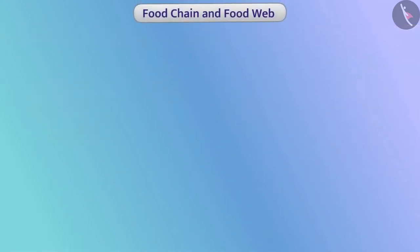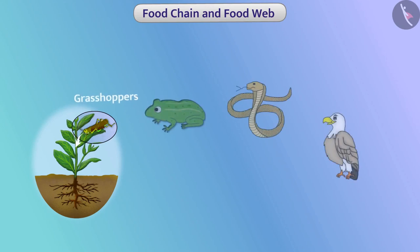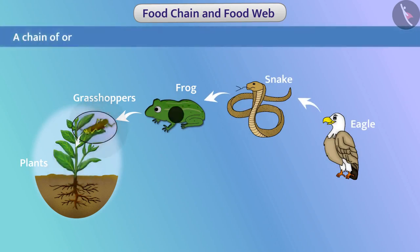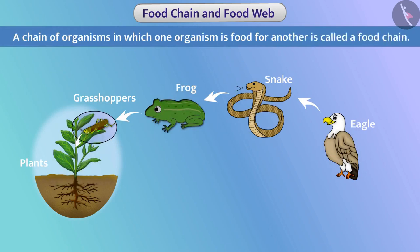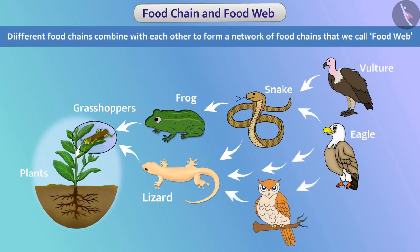Now let us learn about the food chain and food web. Organisms in any ecosystem receive food from other organisms. For example, grasshoppers get food from plants, frogs from grasshoppers, snakes from frogs, and eagles from snakes. A chain of organisms in which one organism is food for another is called a food chain. Basically, an organism eats more than one organism and is itself eaten up by more than one organism. In this way, different food chains combine with each other to form a network of food chains that we call a food web.